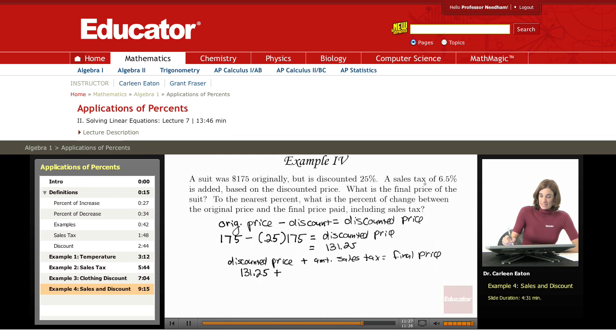I am adding 6.5% of that price, which is 0.065 times $131.25. And that gives me a final price of $139.78.